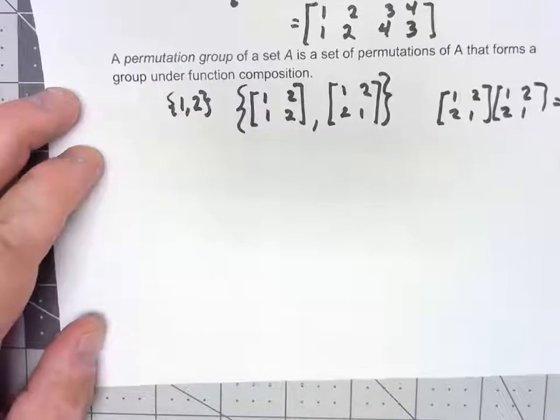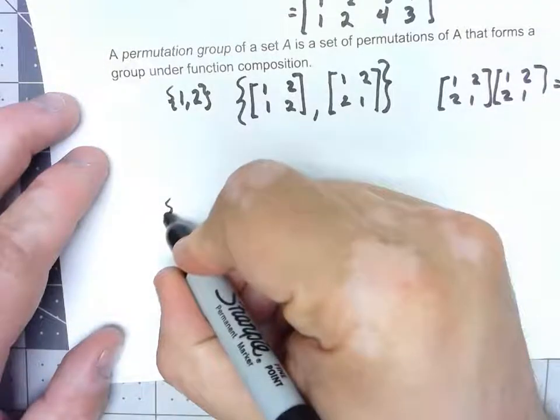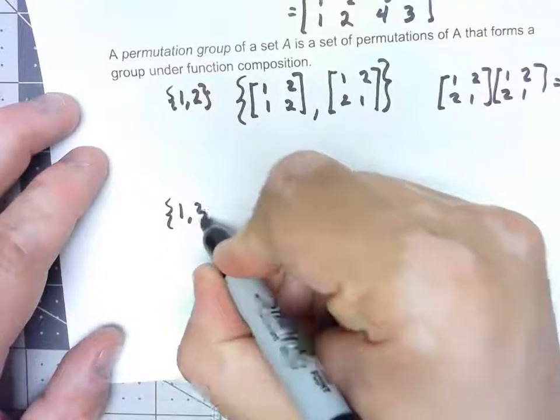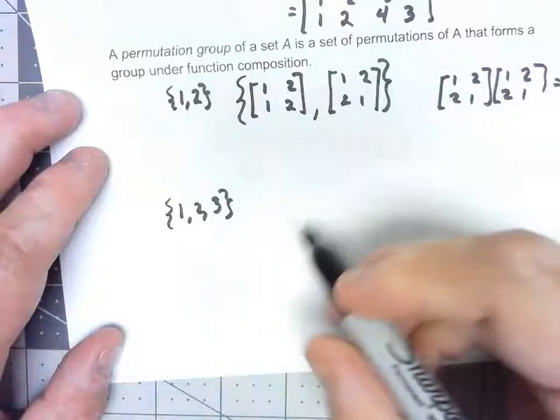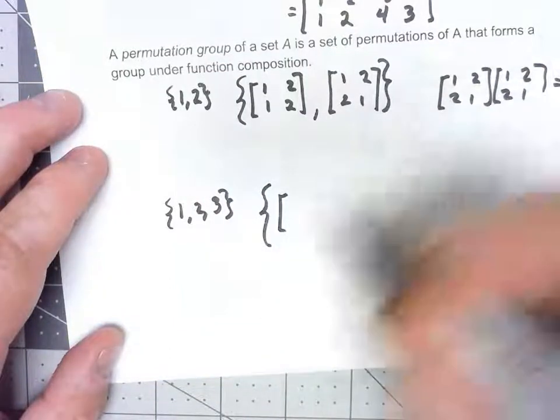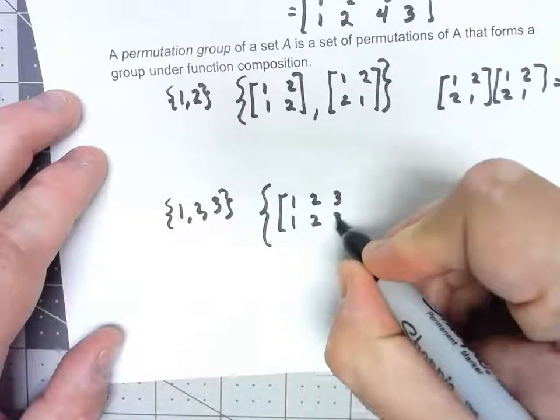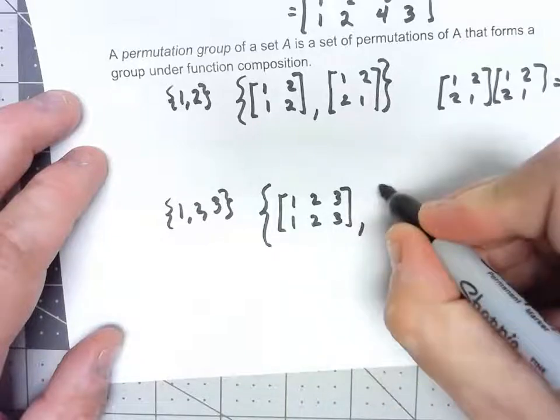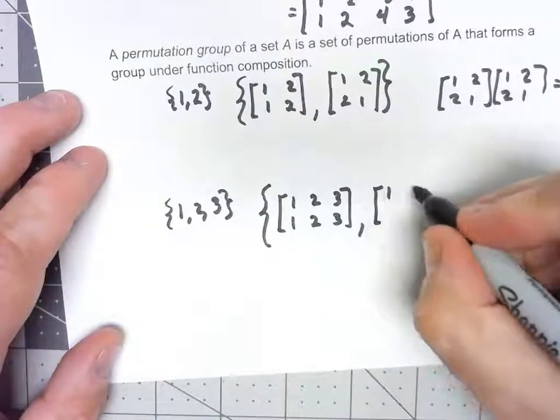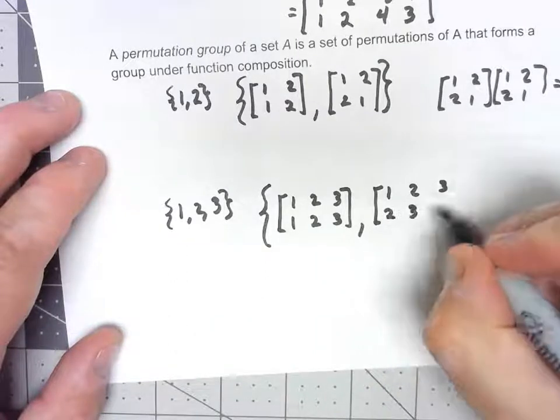Let's go a little bit more than that. Let's say I'm working on the set {1, 2, 3}. Let's say my permutation group, I've got [1, 2, 3; 1, 2, 3], I've got [1, 2, 3; 2, 3, 1].